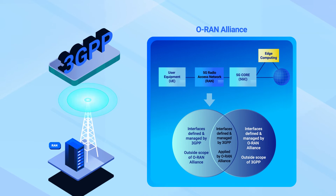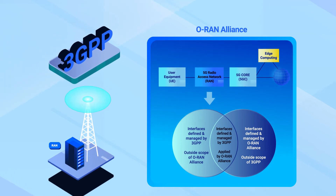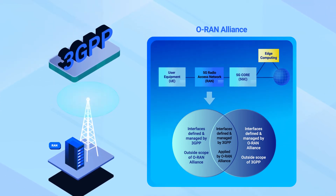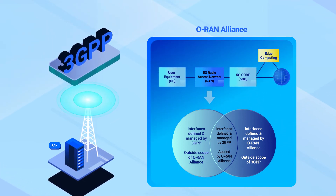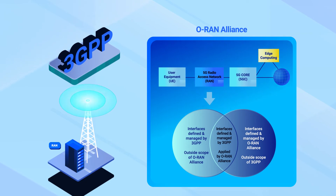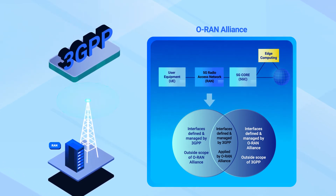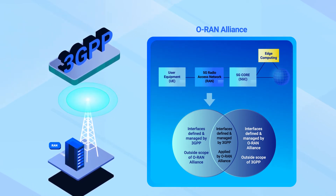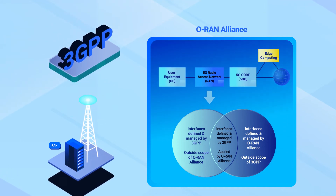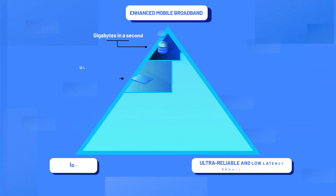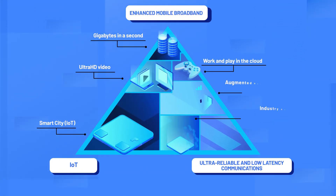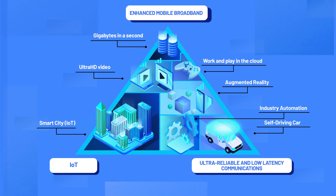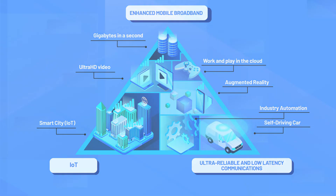Both 3GPP and the ORAN Alliance define 5G RAN interfaces. This figure provides a common view between the 3GPP-based and ORAN Alliance reference architectures. The ORAN Alliance aims to complement 3GPP standards in order to drive open, intelligent and fully interoperable RAN deployments. These ORAN Alliance subsystems and interfaces are where we expect to see innovation into new vendors, new services and new network capabilities.